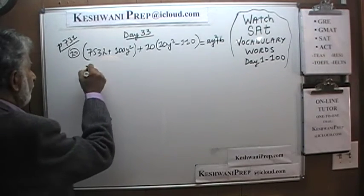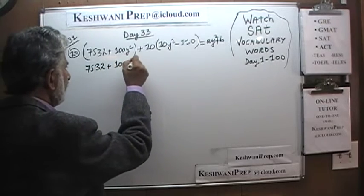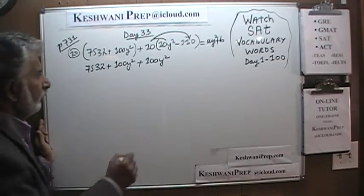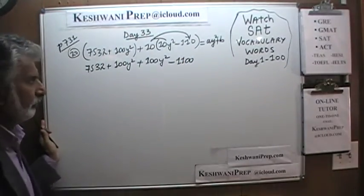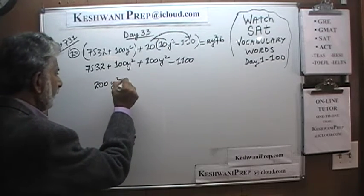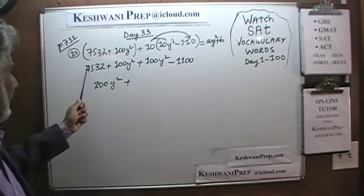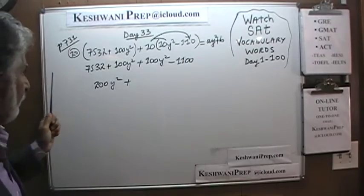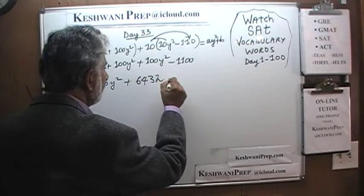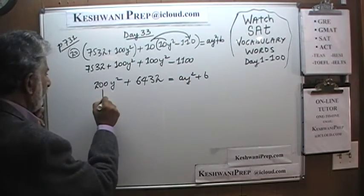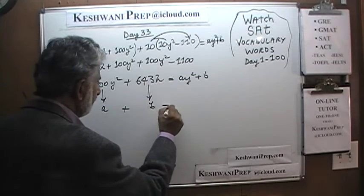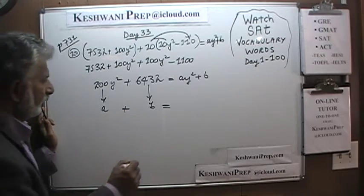We have 7,532 plus 100y² plus, opening the parenthesis, 10 times 10 is 100, so 100y², and 10 times 110 is 1,100. Combining terms: 100y² and 100y² gives 200y², plus 7,532 minus 1,100 equals 6,432. So 200y² plus 6,432 equals ay² plus b. Our a equals 200 and b equals 6,432. Therefore, a plus b is 6,432 plus 200, which is simply 6,632.